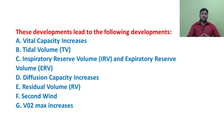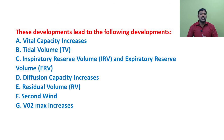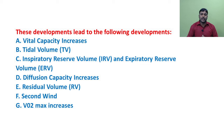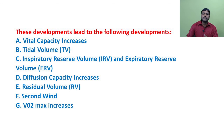Inspiratory Reserve Volume (IRV) and Expiratory Reserve Volume (ERV): the lungs are capable of inhaling additional air during a deep inspiration; the amount of air that can be inhaled in addition to the tidal volume is the IRV. In deep forceful expiration, the lungs are capable of exhaling additional volume beyond tidal volume, known as ERV. In healthy young adults, IRV measures about 3 liters and ERV is approximately 1.3 to 1.5 liters. Adaptational changes due to exercise increase both IRV and ERV.